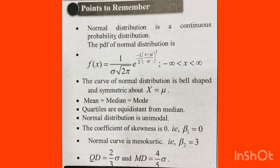The mean value, median value, and mode value are all equal. Quartiles are equidistant from the median, and you can use Q1 and Q3.